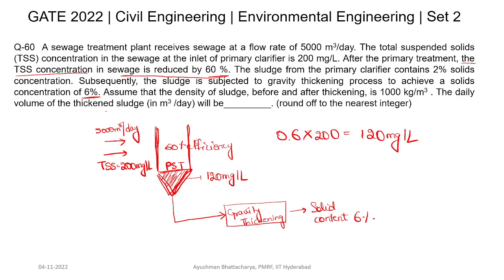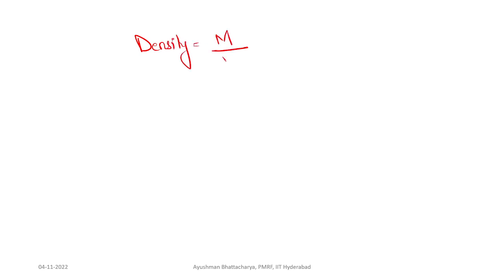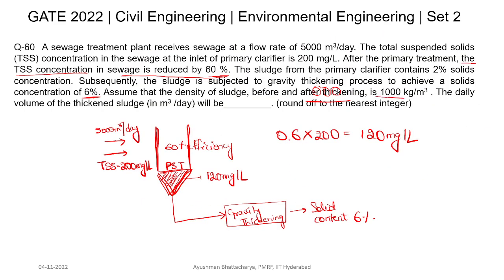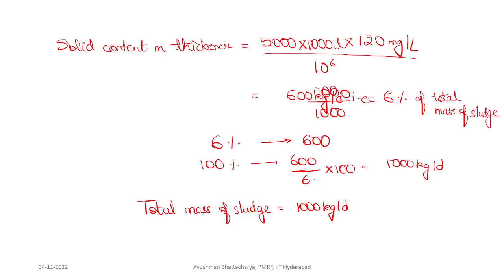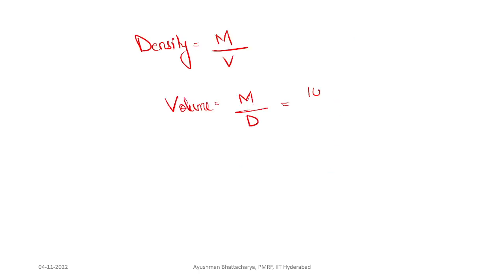The question asks for the daily volume of the thickened sludge. We know that density = mass ÷ volume, so volume = mass ÷ density. The total mass was calculated as 10,000 kg per day. The density is given as 1000 kg per m³. Therefore, volume = 10,000 ÷ 1000 = 10 m³ per day. I hope this is clear. Thank you.